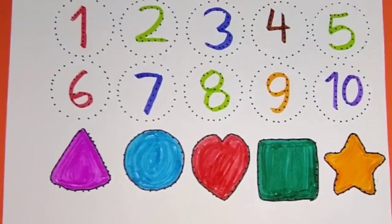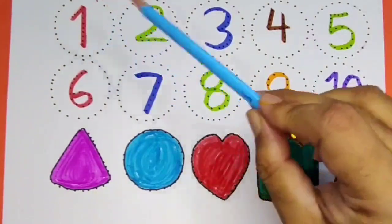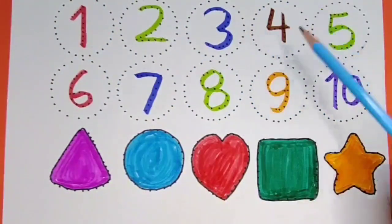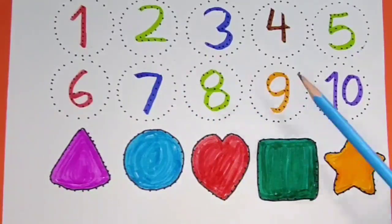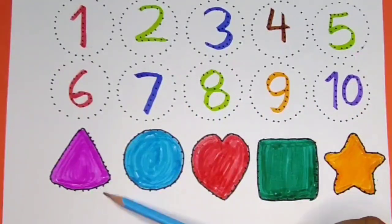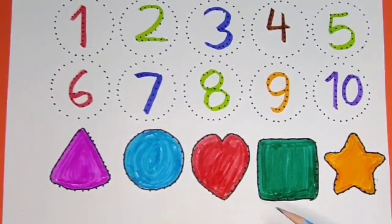What you learn? 1, 2, 3, 4, 5, 6, 7, 8, 9 and 10. Triangle, Circle, Heart, Square and Star.